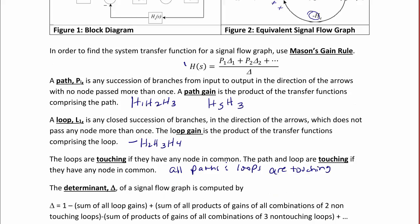The determinant Δ of a signal flow graph is computed by Δ is equal to 1 minus the sum of all the loop gains, plus the sum of all products of gains of all combinations of two non-touching loops, minus the sum of products of gains of all combinations of three non-touching loops, and so on.